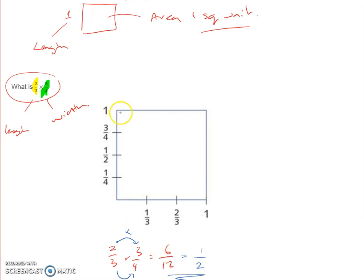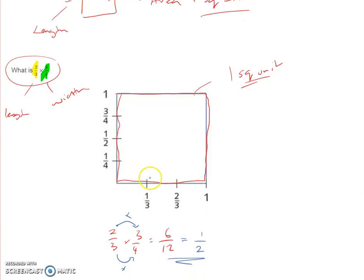Well, the whole, the size of that is one whole, isn't it? It's one square unit. And if you start cutting it up into thirds first, you've created third pieces.